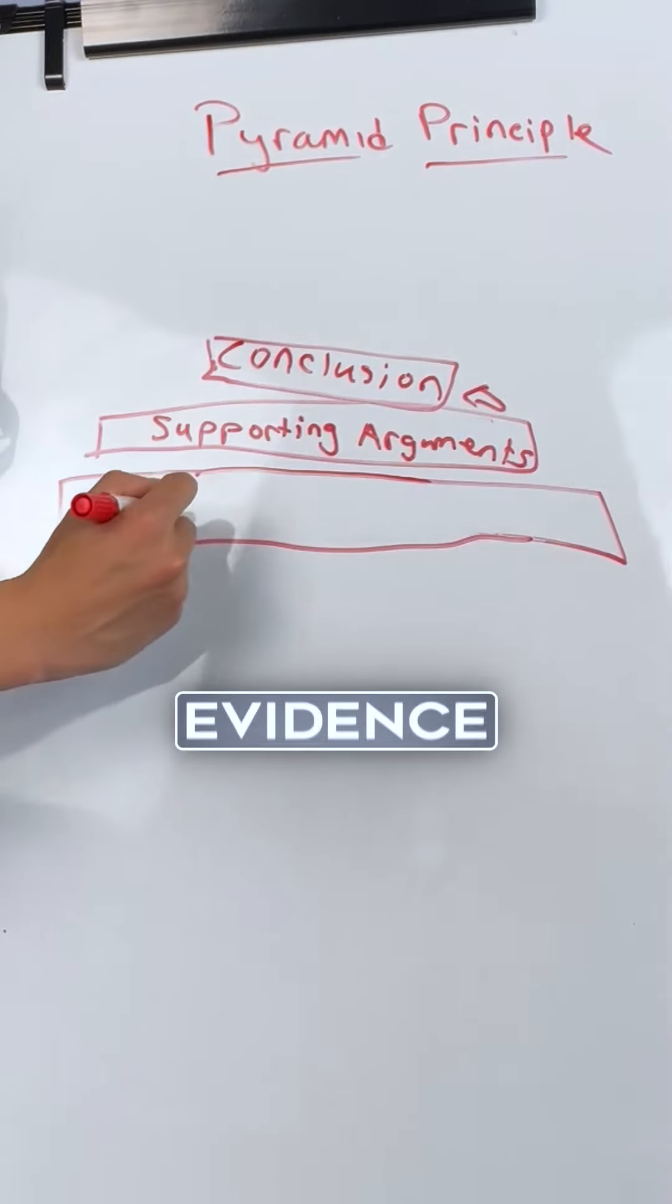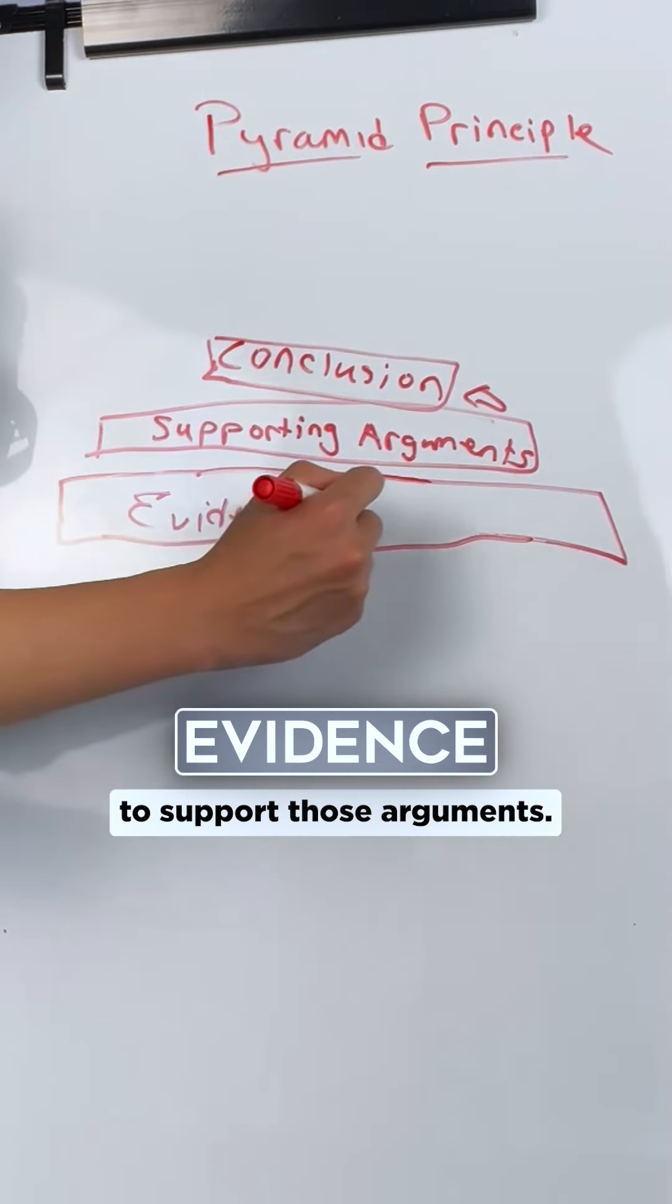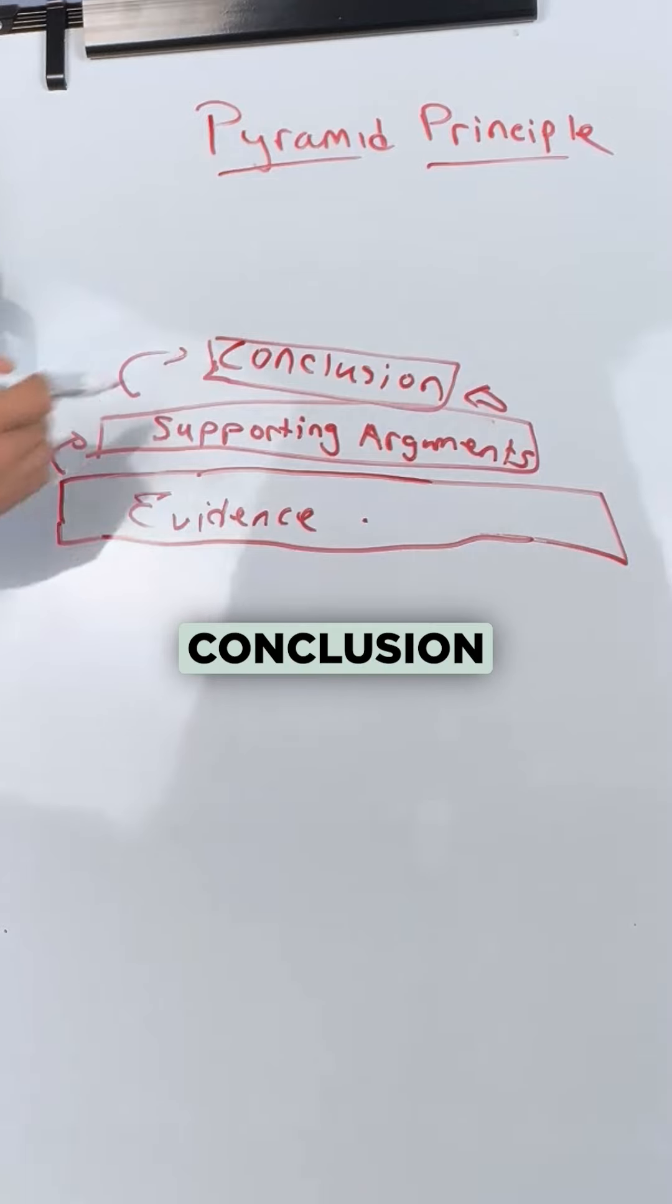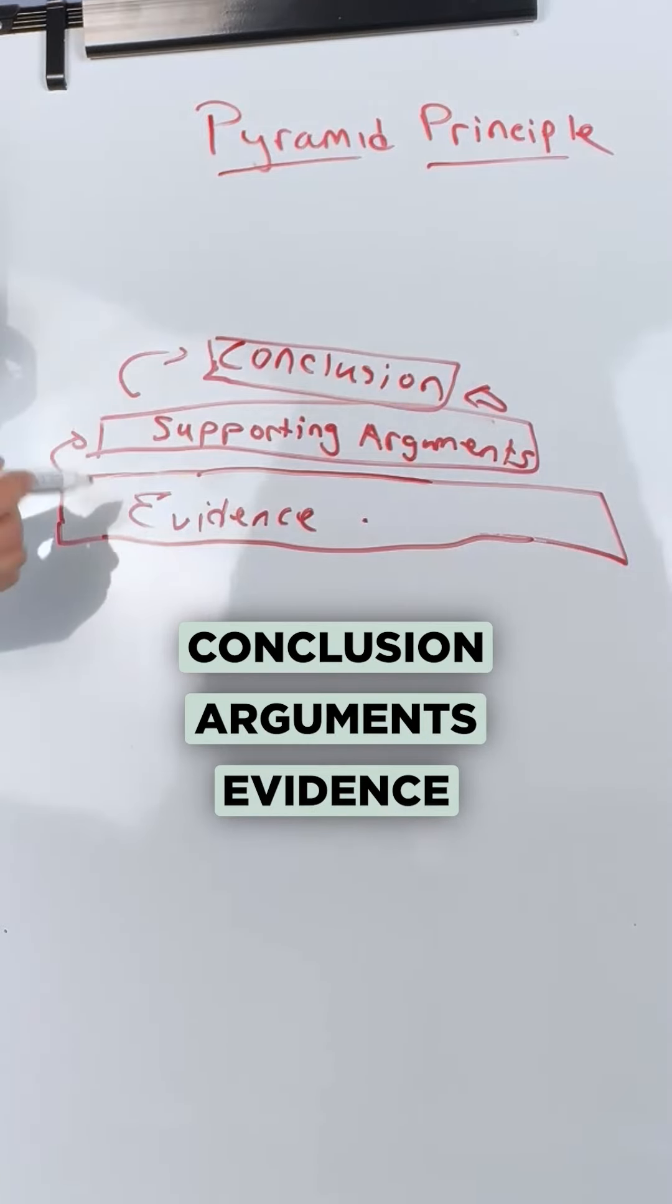And then finally, you want to give evidence to support those arguments. And that is what we call the pyramid. You want to start with the conclusion, then go to the arguments, then go to the evidence.